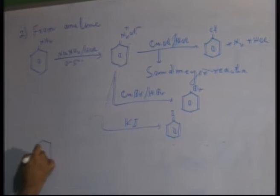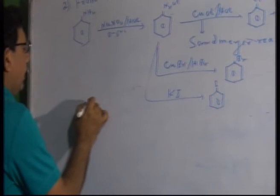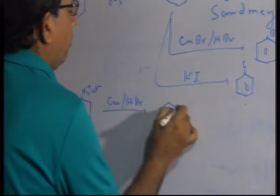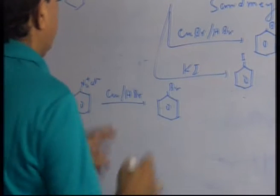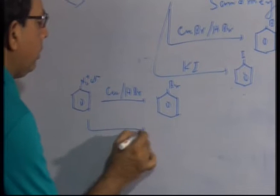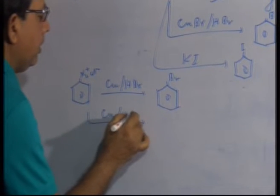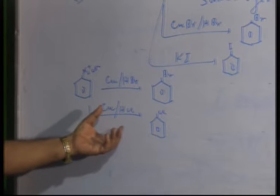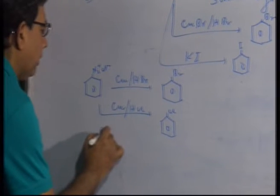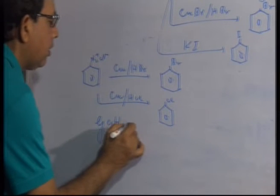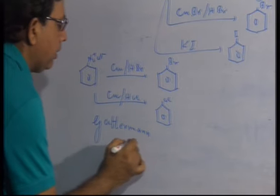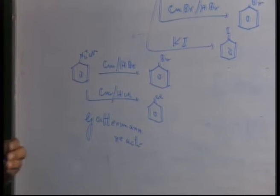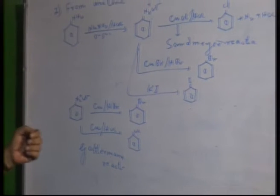Benzene diazonium chloride can also be treated with copper powder and HBr to give bromobenzene, or copper powder and HCl to give chlorobenzene. This type of reaction using copper metal (instead of cuprous salt) is known as the Gattermann reaction. So from aniline, chlorobenzene, bromobenzene, or iodobenzene can be prepared either by the Sandmeyer reaction or by the Gattermann reaction.